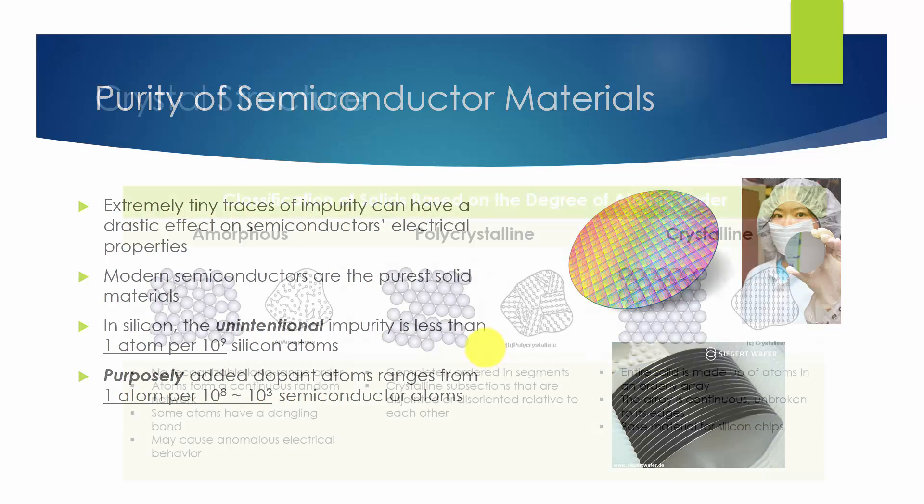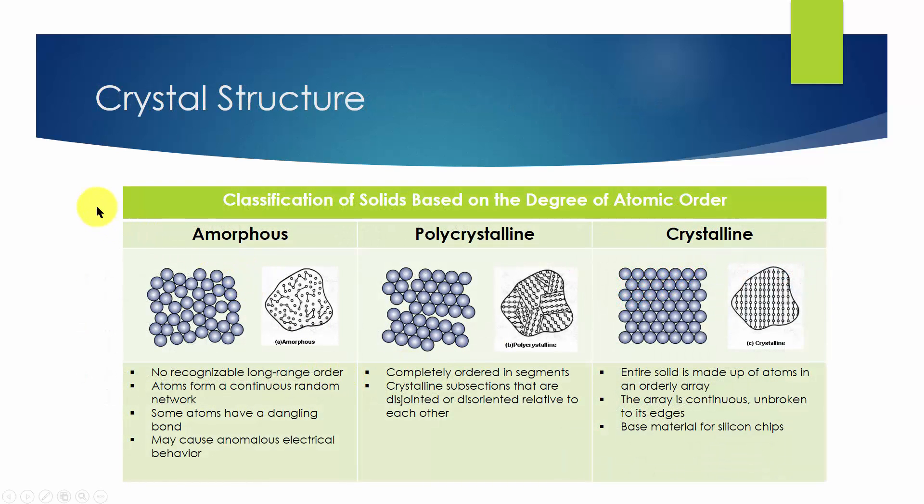The spatial arrangement of atoms within the material plays an important role in determining the precise properties of the material. There are three broad classifications of solid materials: